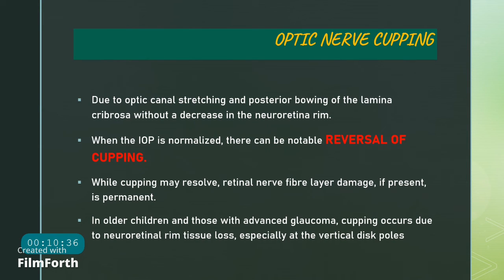Optic nerve cupping also occurs in these children due to the stretching mechanism. As the sclera stretches, there is posterior bowing of the lamina cribrosa and stretching of the optic canal, giving the appearance of decreased neural retinal rim thickness and optic nerve cupping. Importantly, when IOP is normalized, there can be a reversal of cupping — a very important feature of primary congenital glaucoma. However, in advanced glaucoma with retinal nerve fiber layer damage, or in older children where cupping involves actual neural retinal rim tissue loss, the cupping will be permanent.